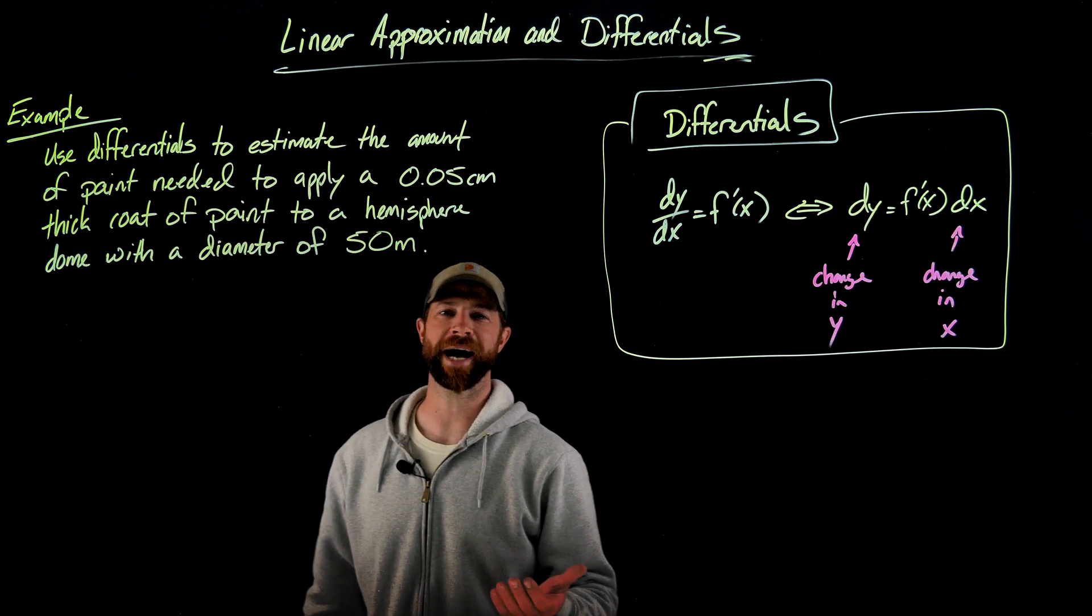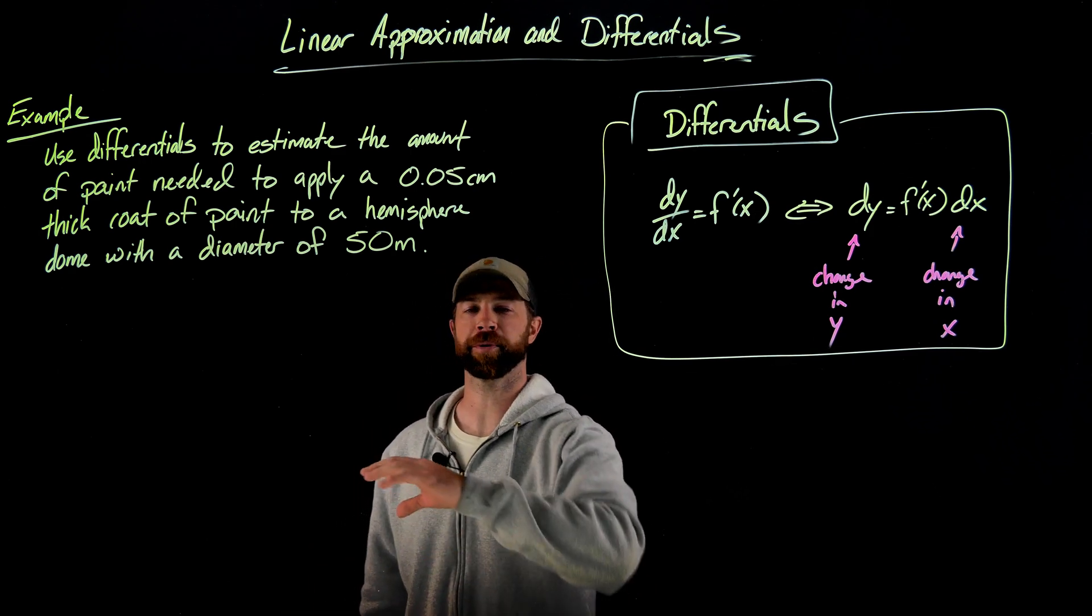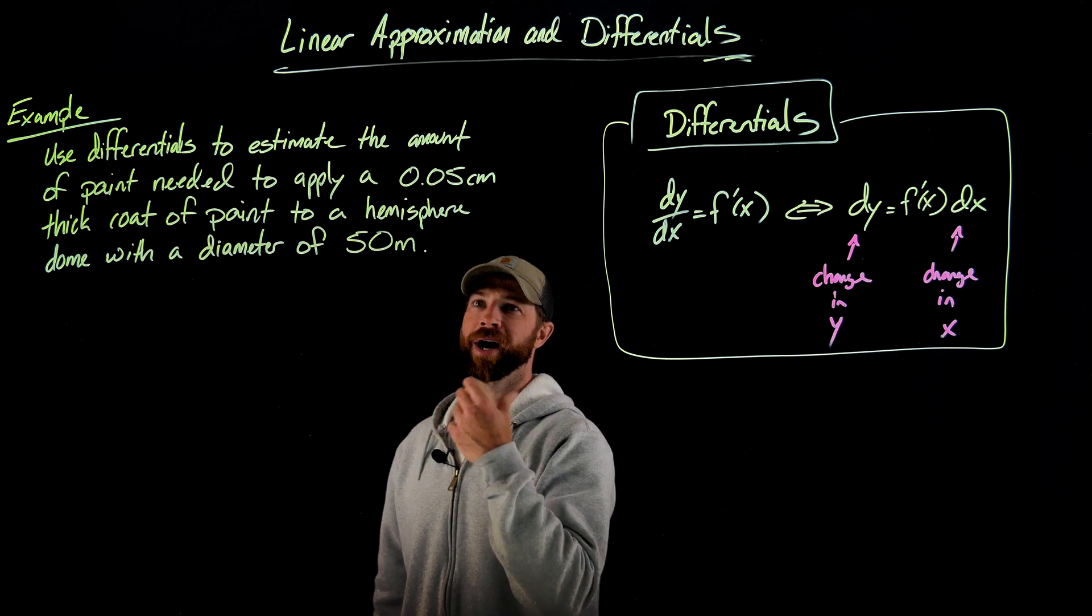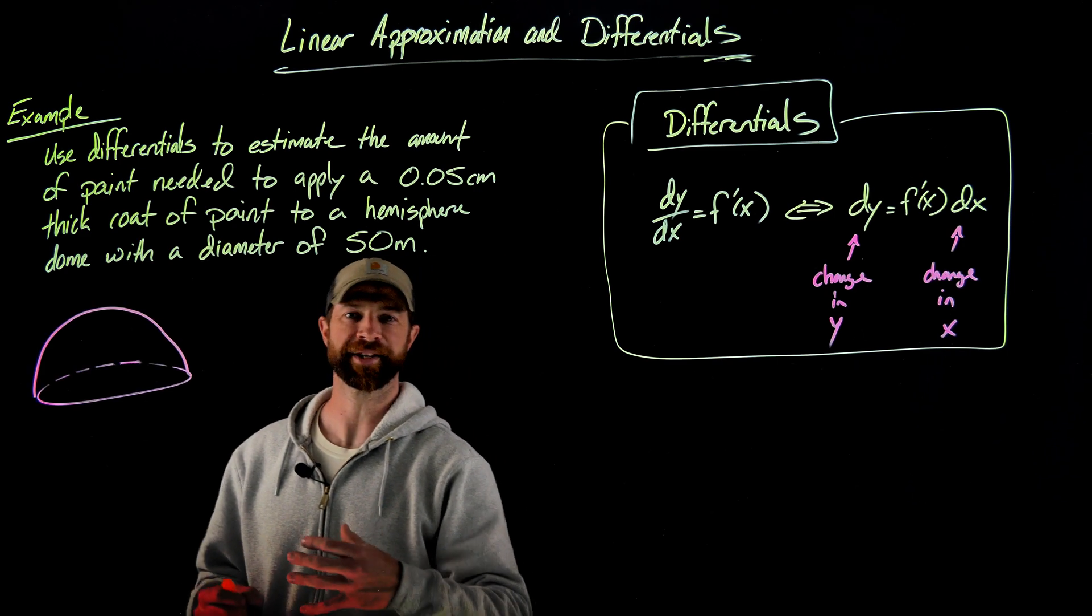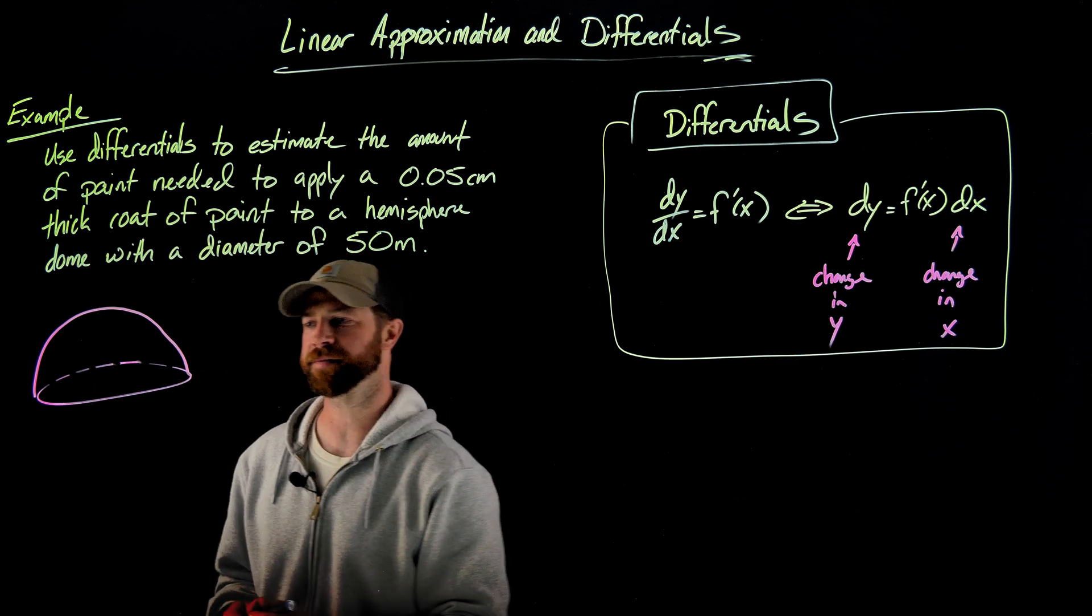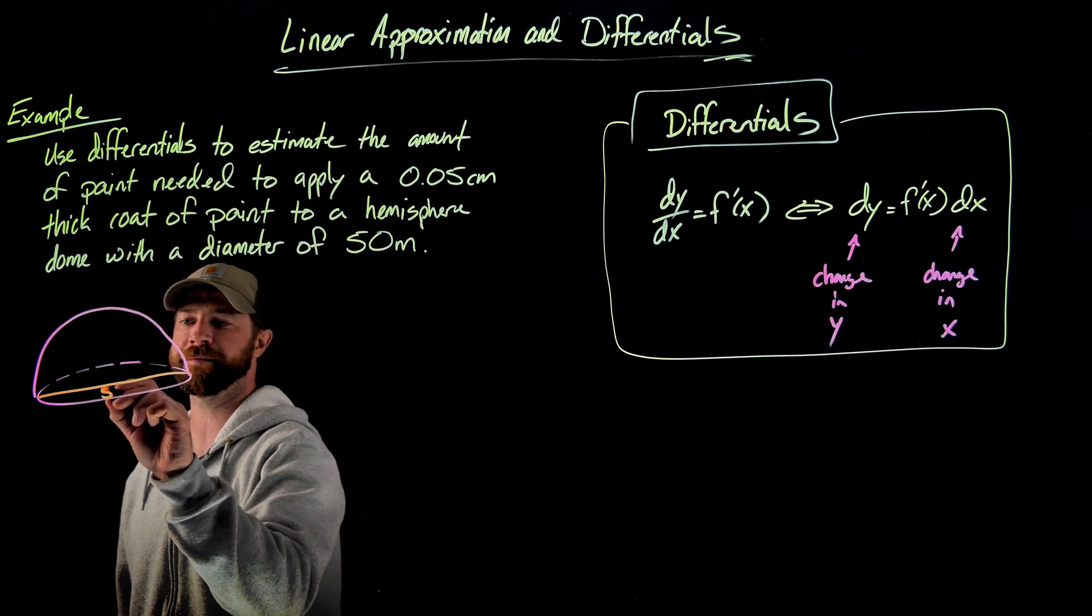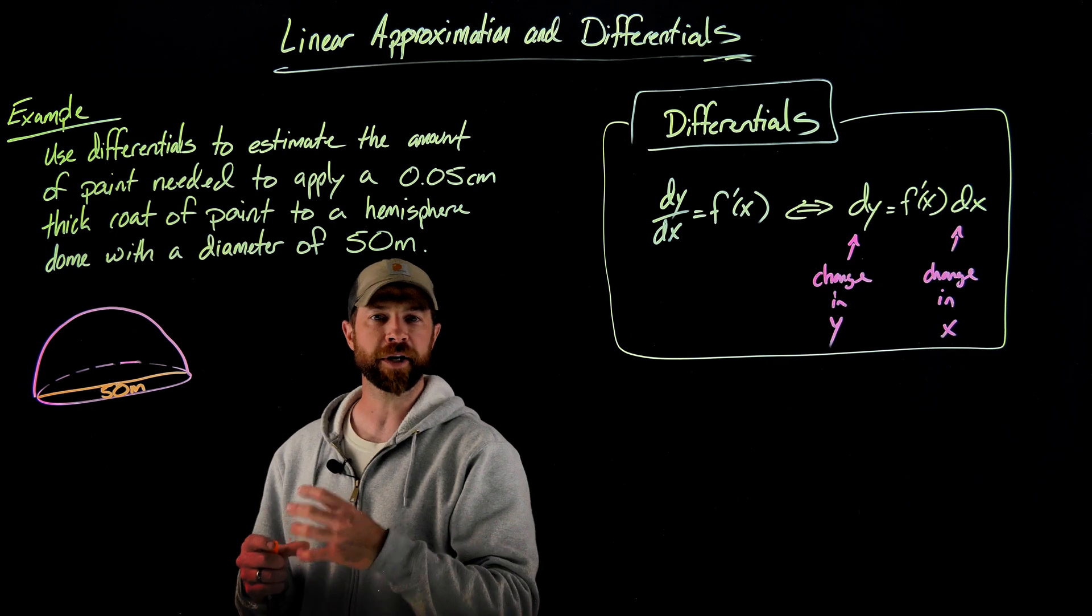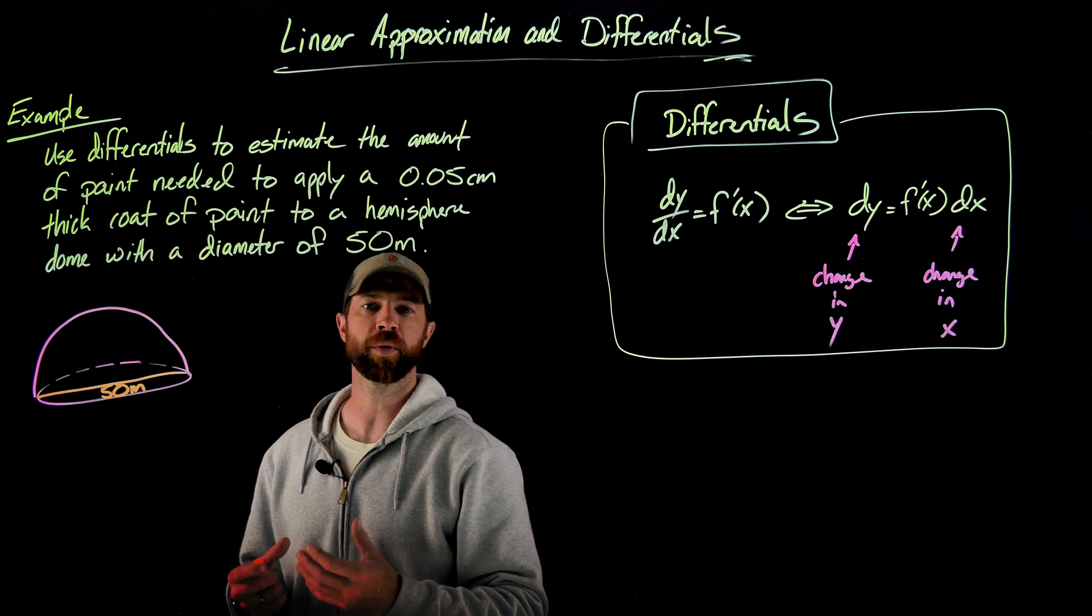All right. So we have a really cool application of differentials here. We're being asked to estimate the amount of paint needed to apply a 500th of a centimeter thick coat of paint to a hemisphere dome that has a diameter of 50 meters. So the context here is we have this dome of sorts that we're trying to paint. It's a hemisphere, which means it's half a sphere. We're being told that it has a diameter here of 50 meters. If we paint all the way around this 500th of a centimeter thick, the question is how much of the paint are we going to need?